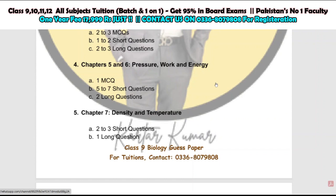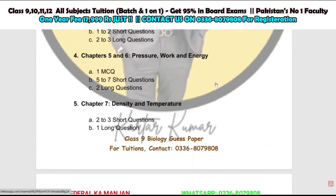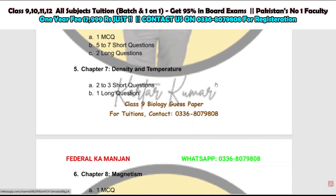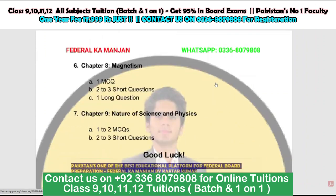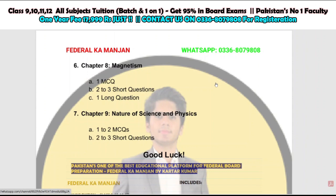Chapters 5 and 6 are somewhat important — MCQs can come from chapters 2 and 3, and you can have short questions and long questions from them. Chapter 7 is not heavily tested; you can have at most two short questions, such as 'What is temperature?' or 'Define temperature,' and a long question. Two to three short questions can come from chapter 8, along with one MCQ on magnetism — for example, about whether field lines inside a magnet intersect or their behavior. From the nature of science and physics chapter, you will get maximum one MCQ, and in short questions, the significance of something may be asked — not more than two questions.